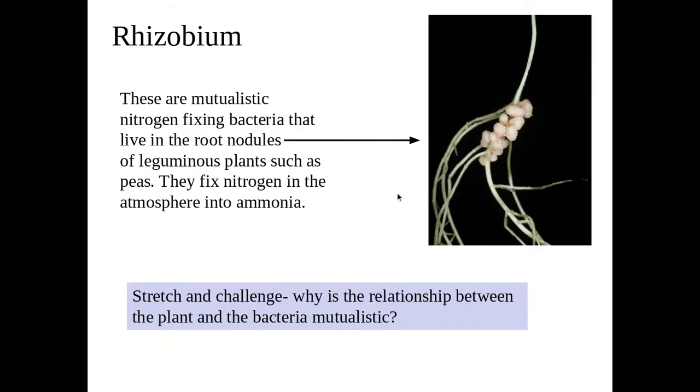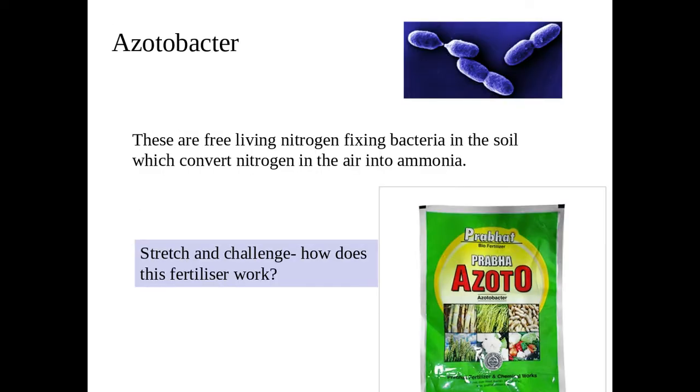We have Rhizobium, which are mutualistic nitrogen-living bacteria in the root nodules of some leguminous plants, such as peas. And they just help to fix nitrogen in the atmosphere into ammonia. We have Azobacter, and these are free-living nitrogen-fixing bacteria in the soil, which convert nitrogen in the air to ammonia.